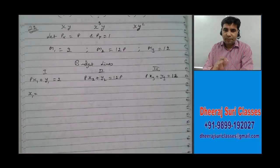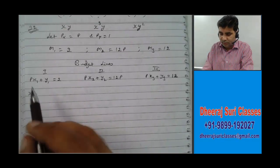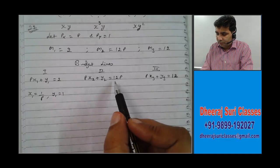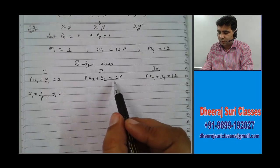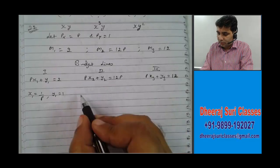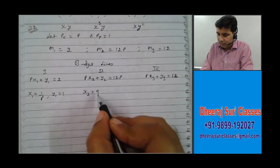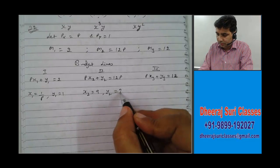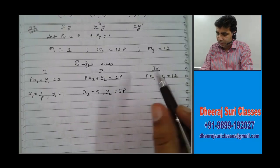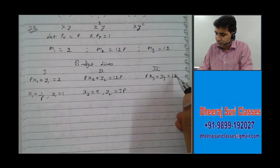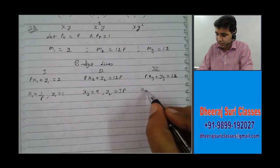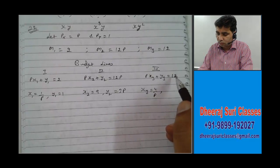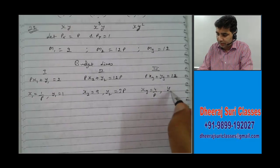Agent 1 is spending his income half and half on both goods. So Px·x1 is 1, meaning x1 is 1/P, and y1 is 1. Agent 2 is spending 3/4 of income on good 1, so 3/4 of 12P is 9P, meaning x2 is 9, and 1/4 on good 2 so y2 is 3P. The third agent is spending 1/3 on good 1, so Px·x3 is 4, x3 is 4/P. And he is spending 2/3 of income on good 2, so y3 is 8.